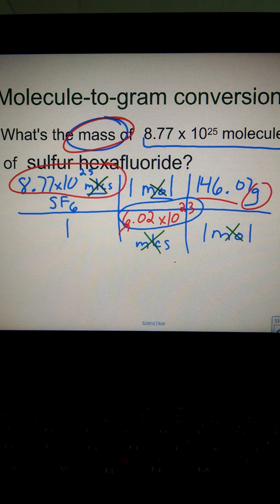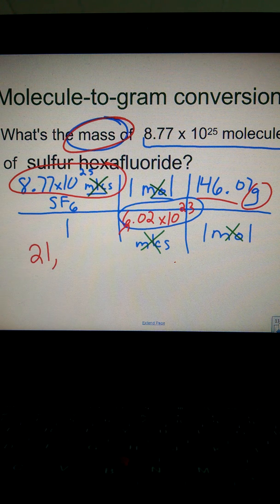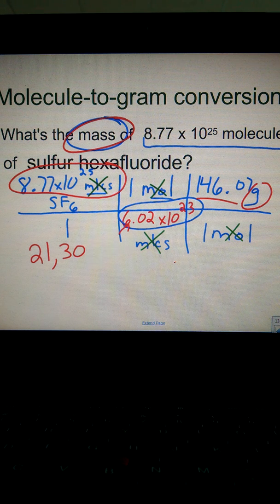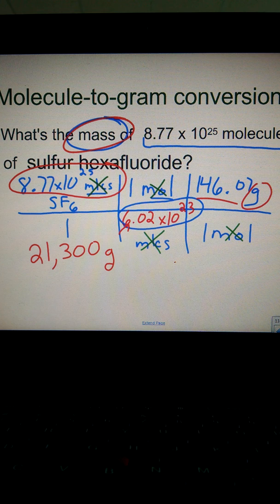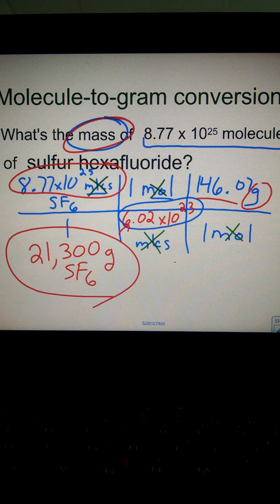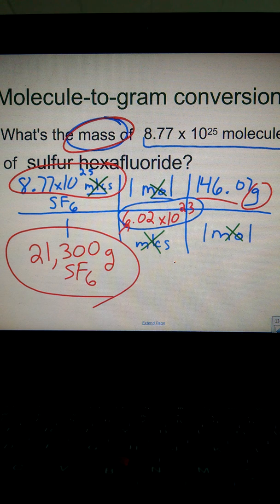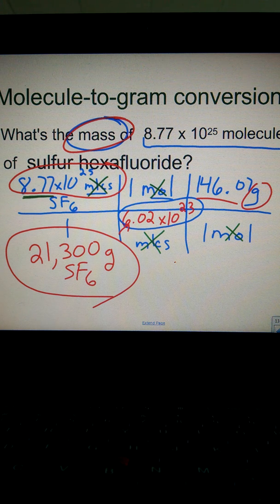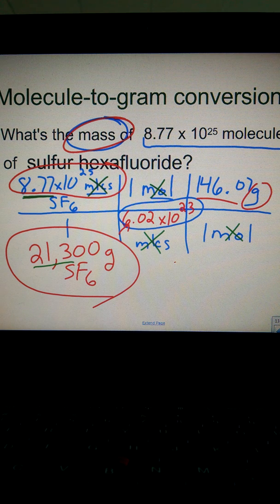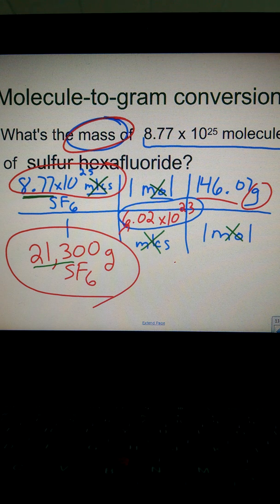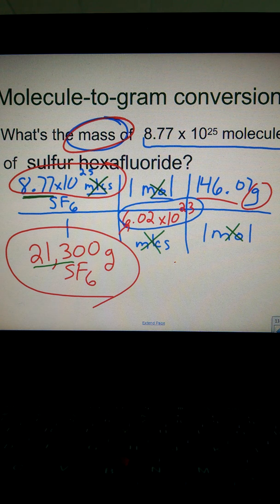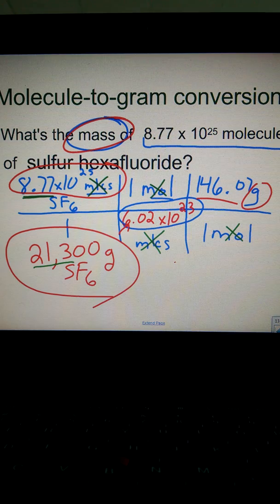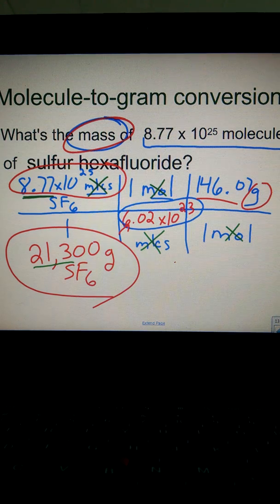And what we end up getting at the end, with sig figs included, you will get 21,300 grams of sulfur hexafluoride. Again, using three sig figs because of the three there. One, two, three. And that is how we do a molecule-to-gram conversion. Note the gram-to-molecule conversion is the exact same thing, just flipped around. Don't make it too difficult for yourself. It's just, everything's just flipped around. And that's it.